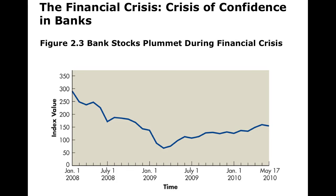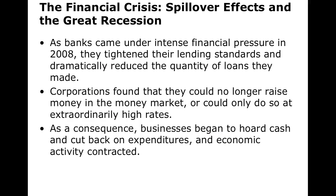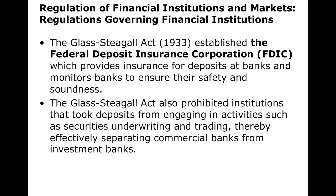Bank stocks went down incredibly low from 2008 and then made a gradual increase since then. Banks came under intense financial pressure in 2008, so they tightened their lending standards to compensate for all their poor lending practices. This had a snapping effect like a rubber band — companies could no longer raise capital in the money markets at reasonable rates. When businesses stopped borrowing and began hoarding cash, they stopped expanding, stopped hiring people, and that created the economic Great Recession.